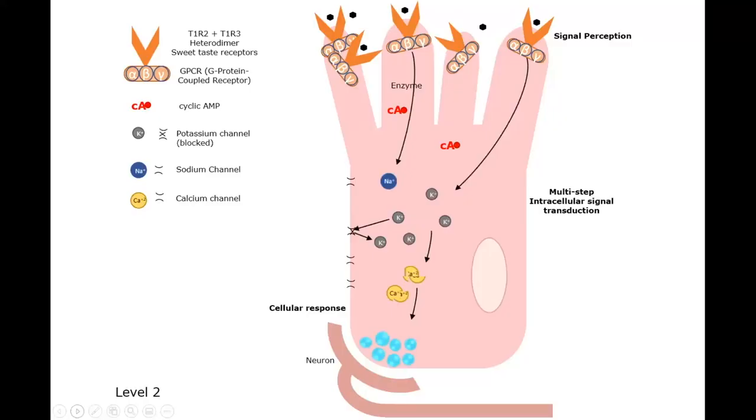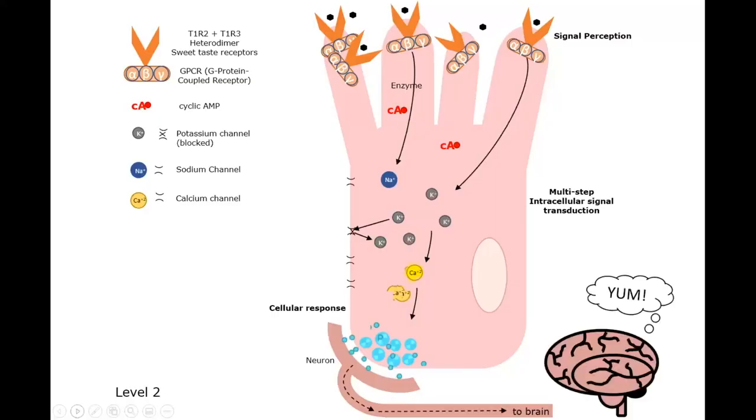This creates the signal for a neurotransmitter response. So neurotransmitters are made in the cell, released into the cell synapse. And then again, these trigger the neuron to send a signal to the brain. And the brain says yum.